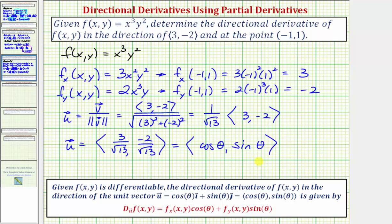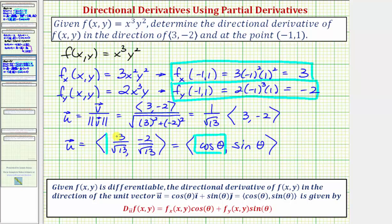Now we have all the information we need. The partial derivative with respect to x at the given point equals three, the partial derivative with respect to y at the given point equals negative two, cosine θ equals 3/√13, and sine θ equals -2/√13. This is all we need to find the value of the directional derivative in the direction of the given vector at the point (-1, 1).